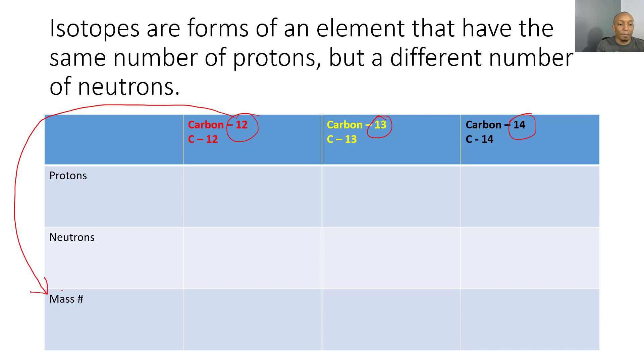What is our mass number? Our mass number is the number of protons plus our number of neutrons. Since we already know what our mass number is, we'll go ahead and write those down. Carbon-12 has mass number 12, carbon-13 has mass number 13, and carbon-14 has mass number 14.